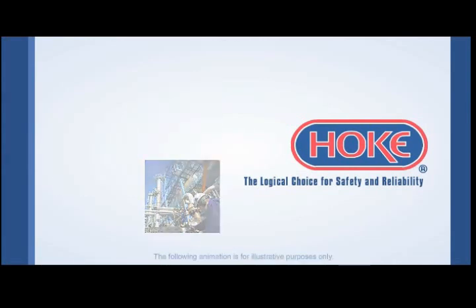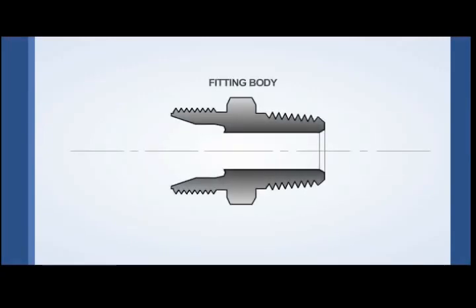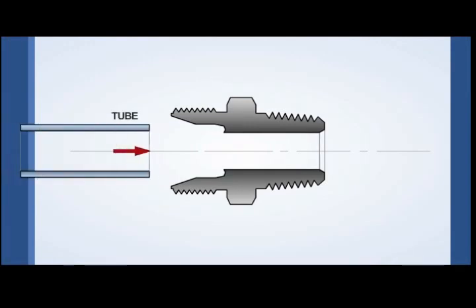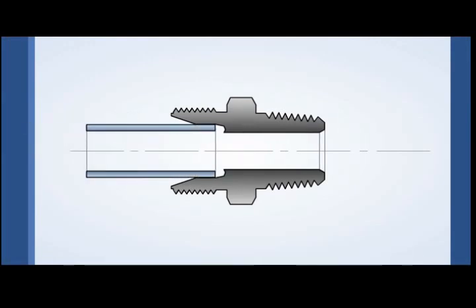To demonstrate the benefits, let's go through the assembly process of a tube and fitting. First, you start with the fitting body. The properly cut tubing is inserted into the end until it comes to a stop at the first feature, called the sizing angle.